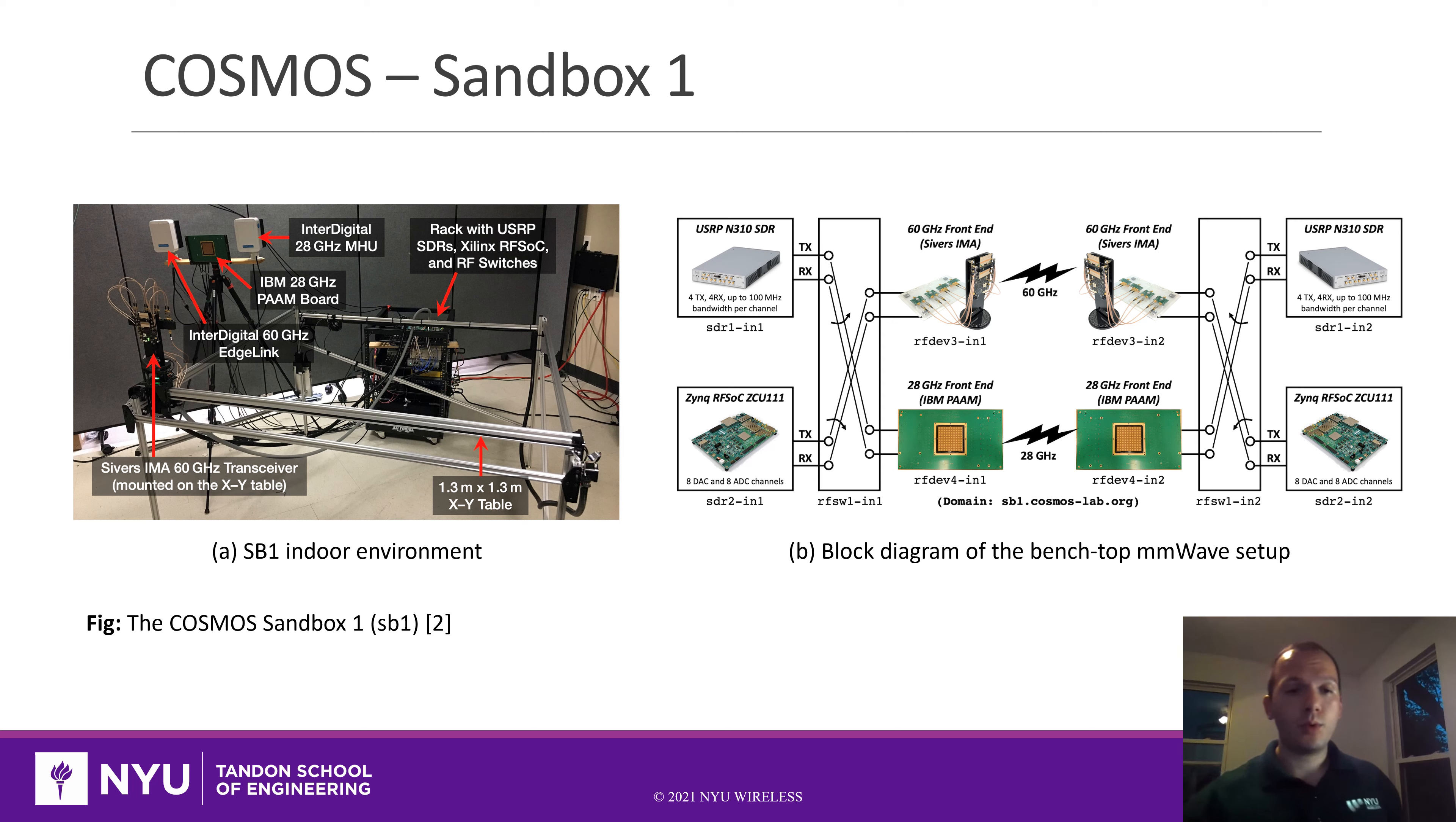In this demo, we will basically utilize one of the indoor deployments of COSMOS that is used to develop new algorithms and test new systems before testing them in the outdoor deployment. In this deployment, we have a variety of millimeter wave front ends such as the IBM 28 gigahertz phased antenna array board and the Sivers 60 gigahertz transceiver.